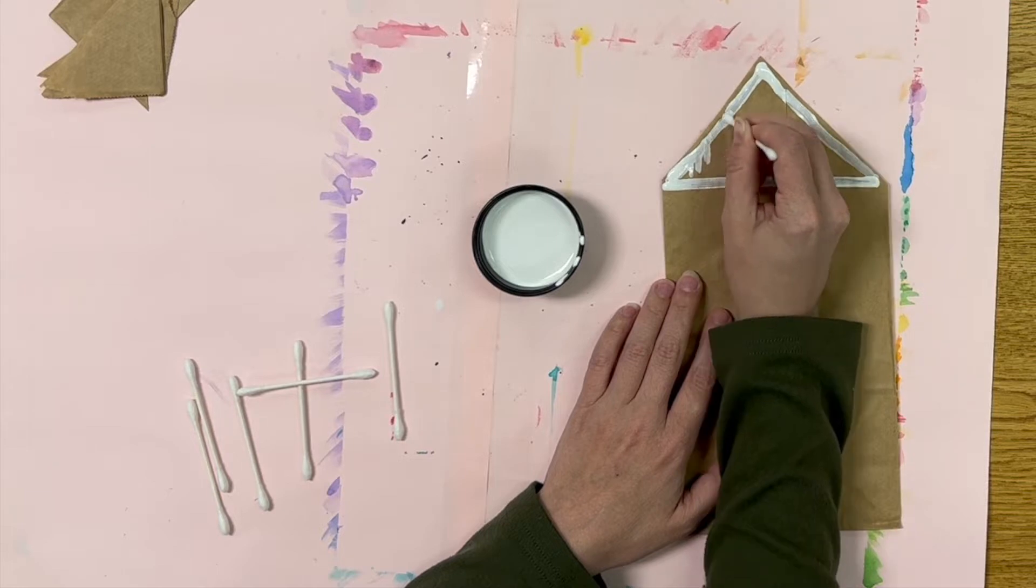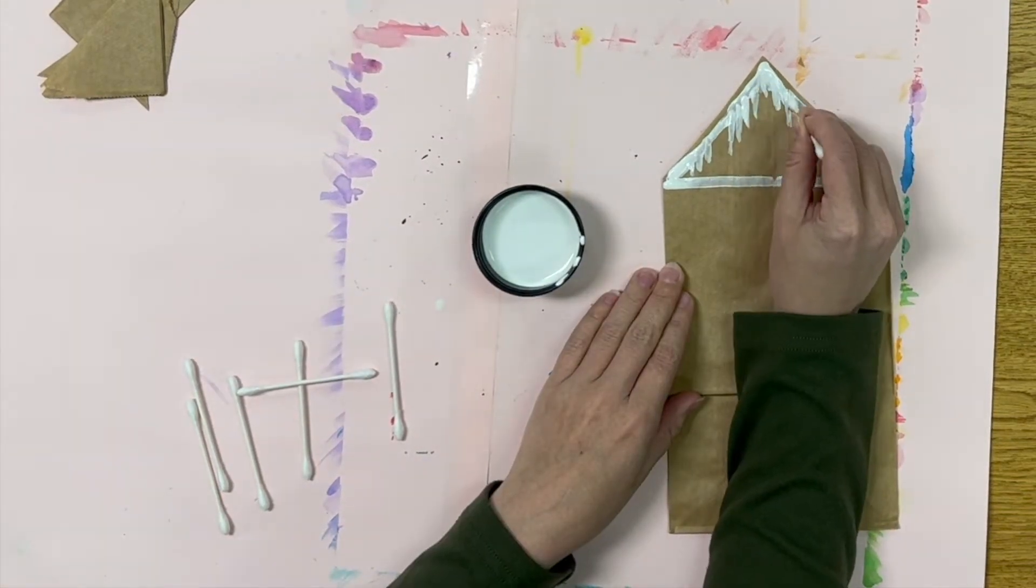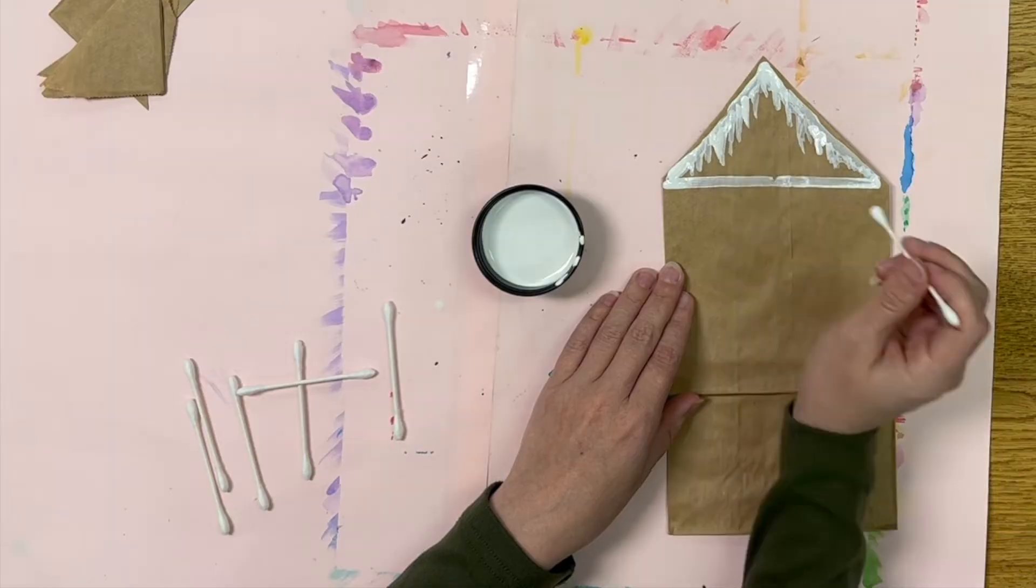For my roof I decided to add some icicles by making some short little lines hanging down from the top of the roof line.